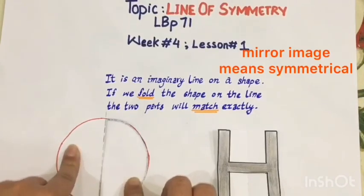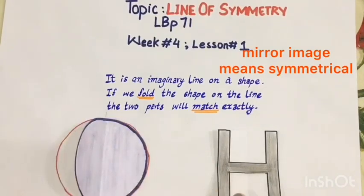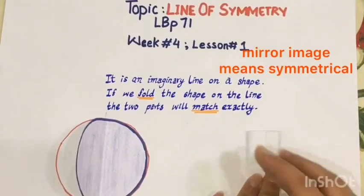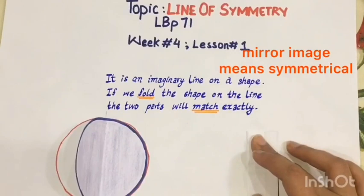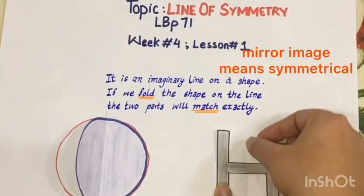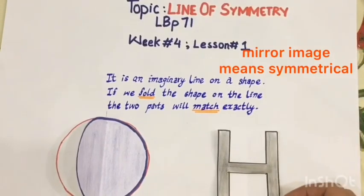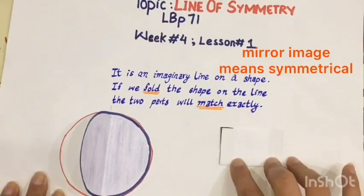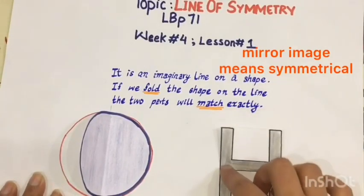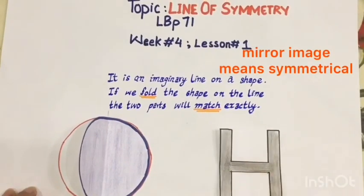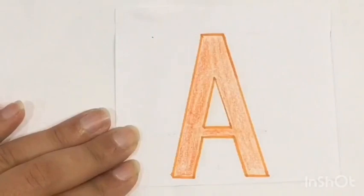Now let's take a look at this letter H. If I fold it like this, the two parts are matching exactly, so this is the line of symmetry. And if I fold it like this, this part is again matching exactly, so this here is also another line of symmetry.